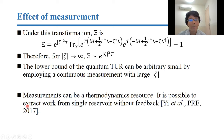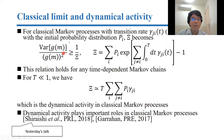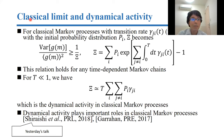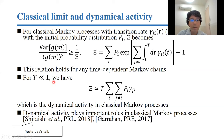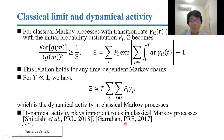It is known that it is possible to extract work from a single reservoir without feedback, so measurements can be thermodynamic resources. For classical Markov processes with transition rate γ from state i to j and initial probability distribution π, the Ξ part becomes a simple expression. This relation holds for any time-dependent Markov chains. When T is very small, Ξ reduces to a representation identical to dynamical activity in classical Markov processes, which plays an important role in classical Markov processes, speed limits, and classical thermodynamic uncertainty relations.